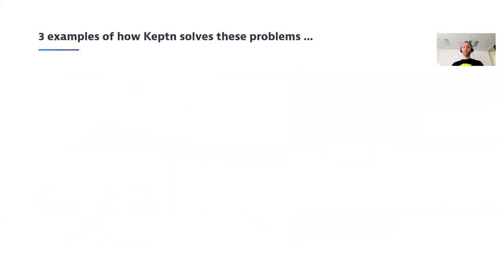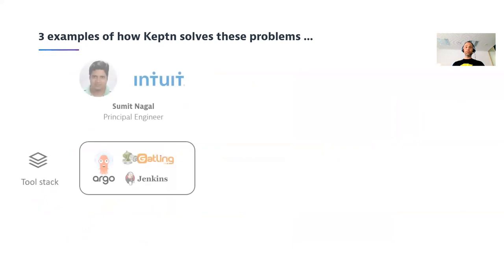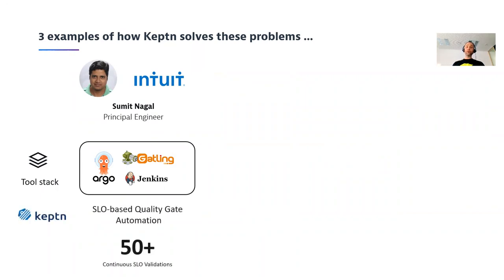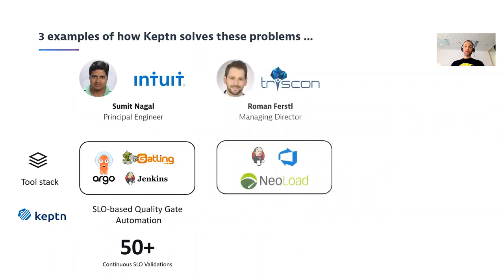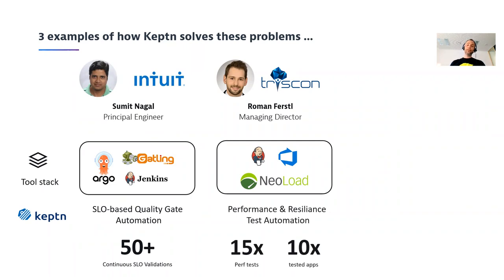Now I want to show you three examples of how Keptn users have been helped. Sumit at Intuit is using Argo, Gatling, and Jenkins for distributed load testing, fully automated, and now using Keptn to completely automate test analysis. Keptn has a capability called SLO-based quality gates — they run their tests in their existing tooling and hand it over to Keptn to fully automatically and continuously evaluate SLOs. Coming back to Roman, who had 15 to 20 tests per year and only 5 apps — now they run 15 times the amount of tests and 10 times the amount of apps, thanks to the automation Keptn brings.